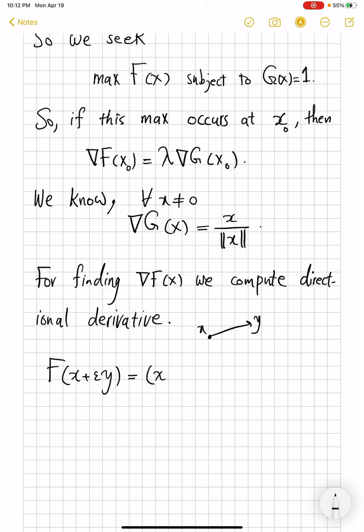Here, this will be (x + epsilon y) transpose, which is linear, goes on to each component, then times A times (x + epsilon y). And then there will be four terms here, one of which is x transpose Ax, which is just F(x). There are two terms with epsilon in them. One is y^T Ax, and the other is x^T Ay. And then there is the higher-order term epsilon squared y^T Ay.